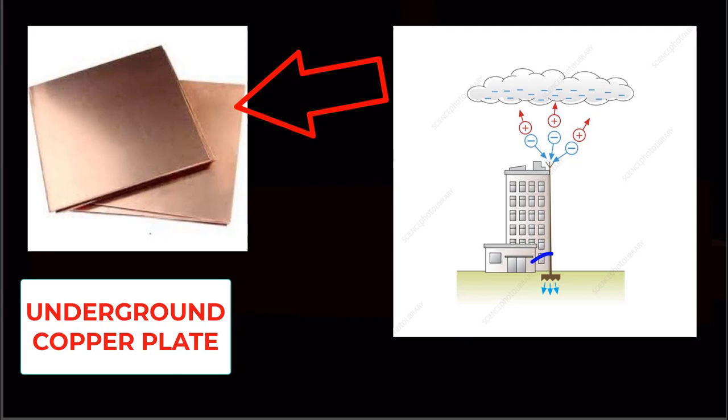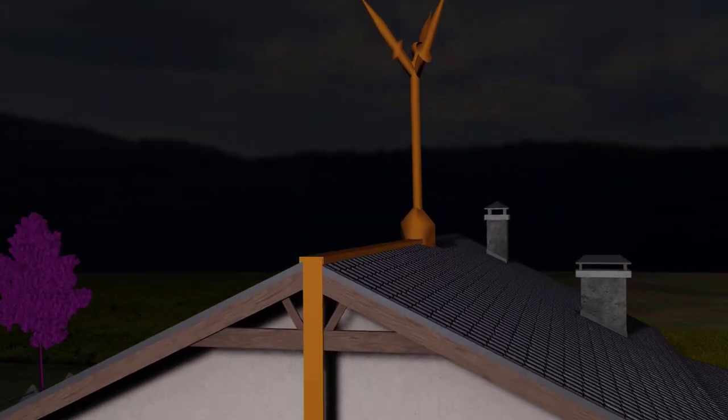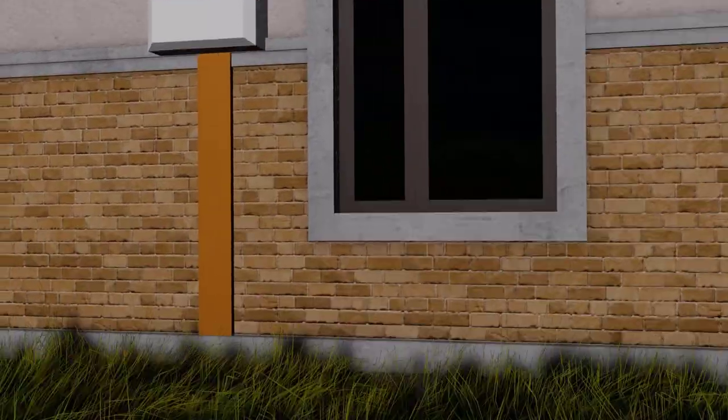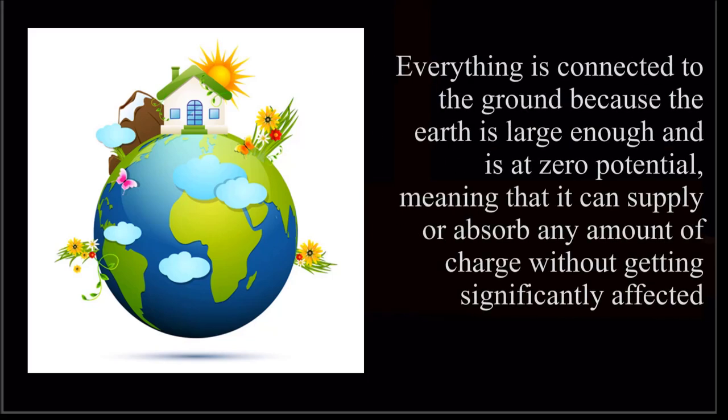The copper plate increases the surface area of contact between the earth and the lightning conductor. Meanwhile, the copper strip is thick enough to conduct current to and from the earth with less resistance. Everything is connected to the ground because the earth is large enough and is at zero potential, meaning that it can supply or absorb any amount of charge without significantly getting affected.